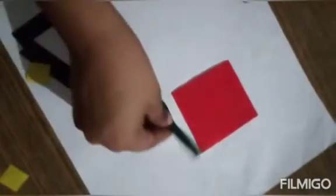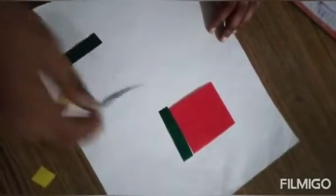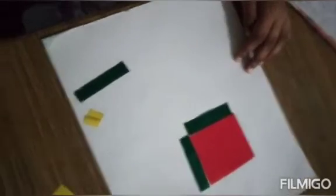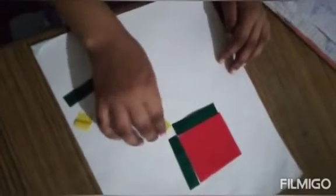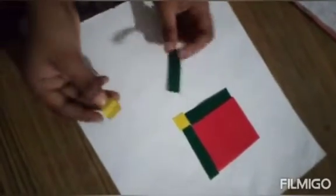First let us put the biggest rectangle here. Now, let us put the first green rectangle here. Now, let us put the second green rectangle below the first red rectangle. Now, place the yellow small square here. Now, we are left with one green and one yellow.